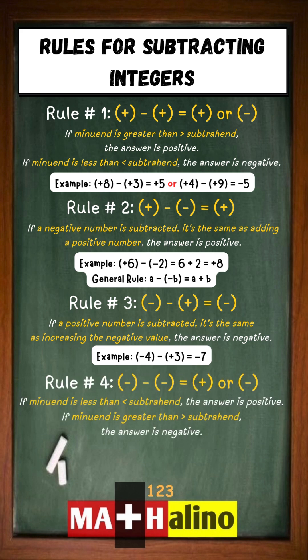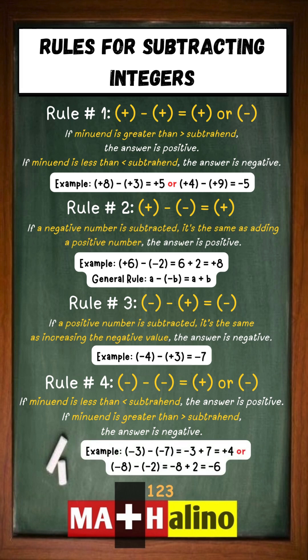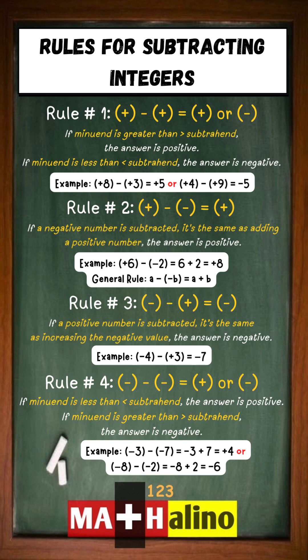Rule number four: if the minuend is less than the subtrahend, the answer is positive. If the minuend is greater than the subtrahend, the answer is negative. Example: negative three minus negative seven equals negative three plus seven equals positive four, or negative eight minus negative two equals negative eight plus two equals negative six.